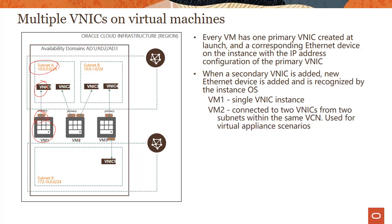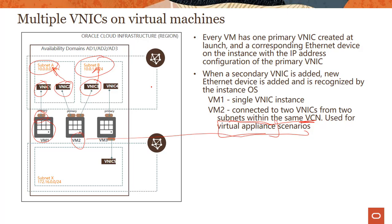VM2 has two VNICs — VNIC2 and VNIC3 — and interestingly, these two VNICs are in two different subnets within the same VCN: VNIC2 is in subnet A and VNIC3 is in subnet B. You would do this because the virtual machine might be a virtual networking appliance sitting between and monitoring those two subnets for security, intrusion detection, or similar purposes.